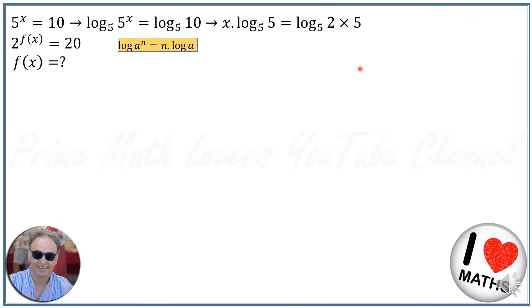Log base a of a equals 1, and log of a times b equals log(a) + log(b). So we replace log₅(5) with 1, and log₅(2×5) becomes log₅(2) + log₅(5). So x = log₅(2) + log₅(5).